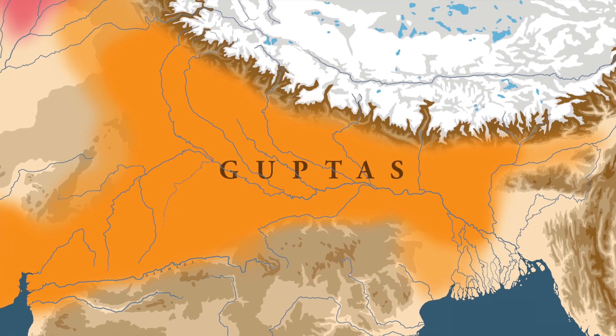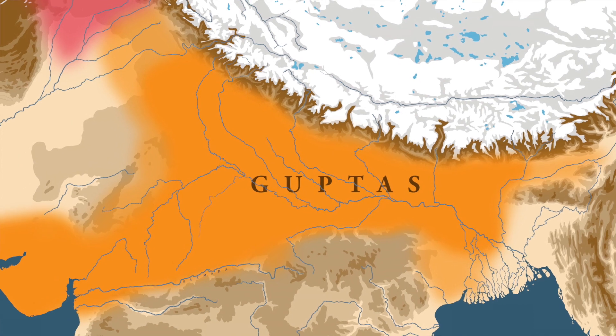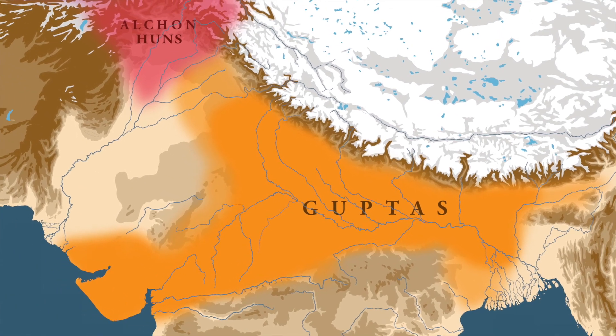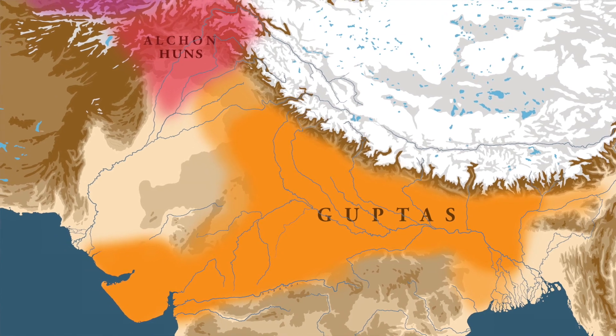The Gupta Empire and its military strength did not allow the Huns to move from their base and conquer large chunks of northern India. But by the end of the 5th century AD, the Gupta Empire had begun to disintegrate, and this decline in Gupta power allowed the Huns to conquer large chunks of the Indian subcontinent. Around the end of the 5th century AD, the Huns started their invasion of India.